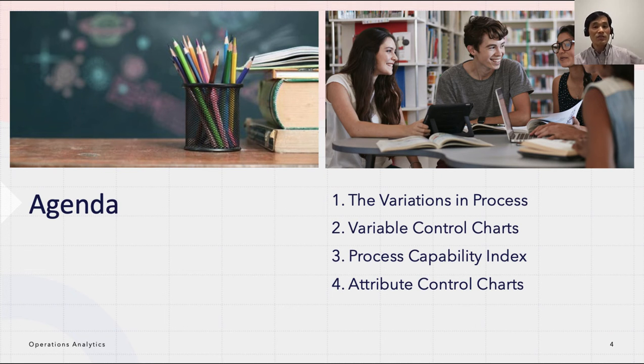The agenda is the variations in process. We want to understand the sources of variations, second variable control chart, process capability index, and attribute control chart.